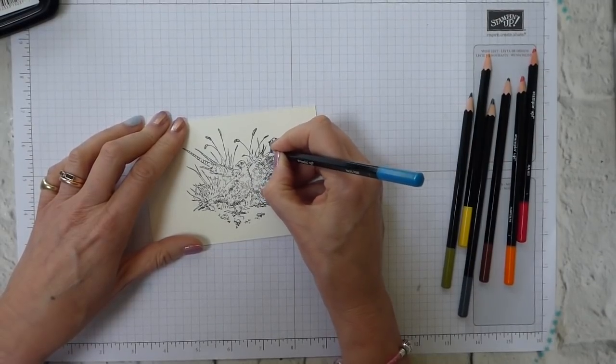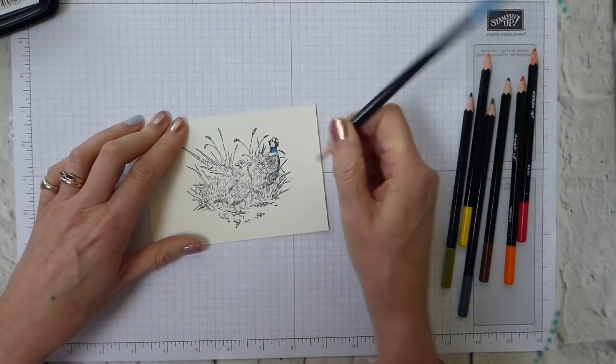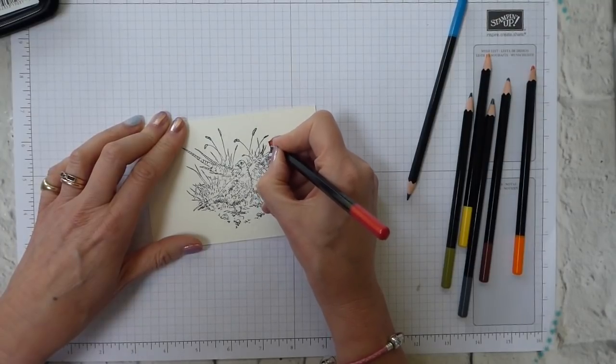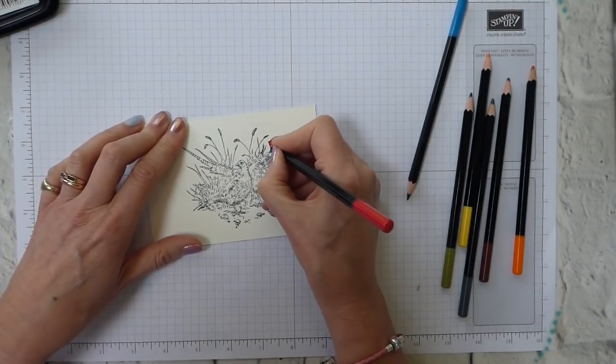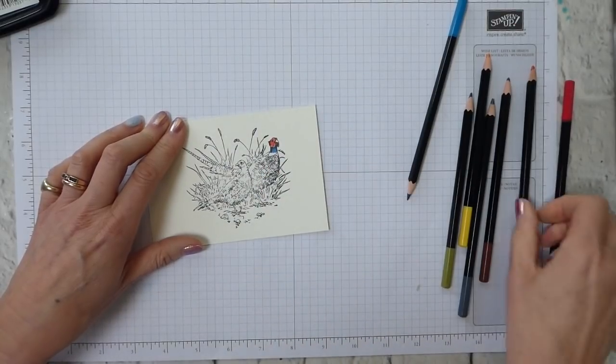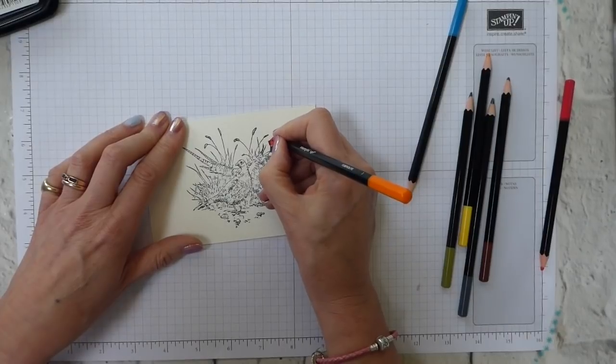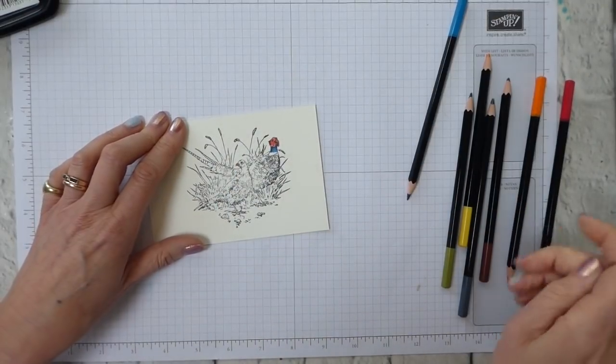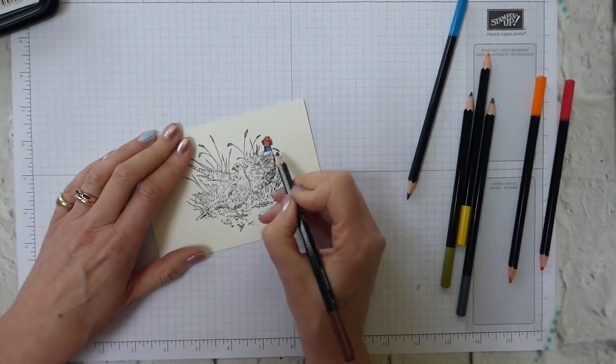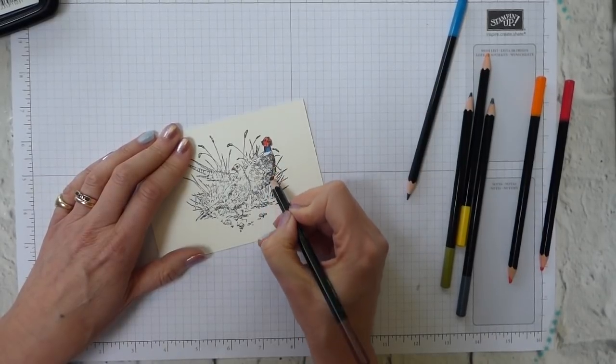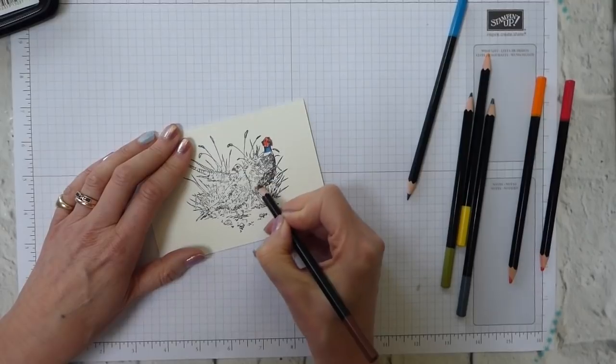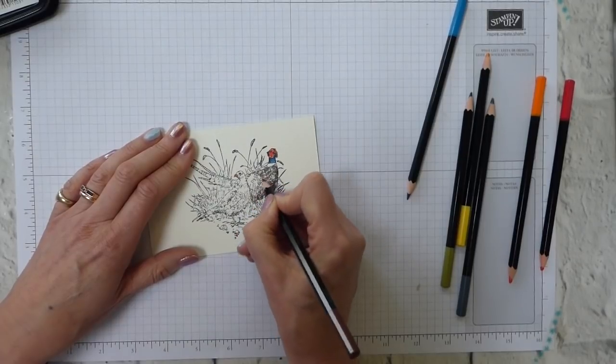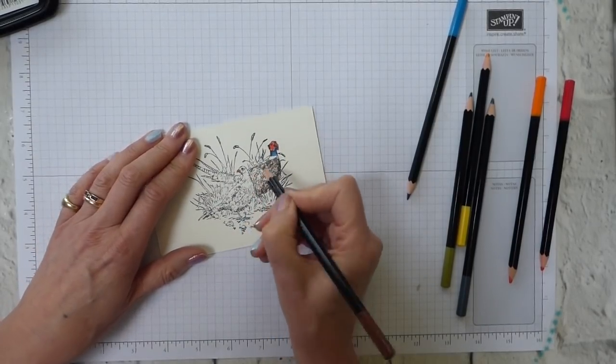So I'm going to start with the male pheasant, which is the one that is sort of more gloriously colored. So I've got Pacific point and real red. Now there is cherry cobbler in the assortment two, which would be quite a good color for his face. But I don't have that to use, so I'm not using it. Pumpkin pie for his beak. And while we've got it out, we'll might as well do her beak as well, although we will be using some more of that. And then early espresso is the main color that I'm going to be adding.